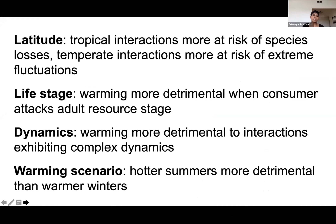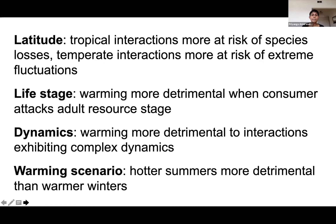Let me summarize the main findings. First, tropical interactions are more at risk of species losses due to climate warming, while temperate interactions are more at risk of extreme fluctuations. Second, warming is more detrimental when the consumer attacks the adult resource stage and when the consumer-resource interaction exhibits complex dynamics. And lastly, hotter-than-average summers tend to be more detrimental than warmer-than-average winters.